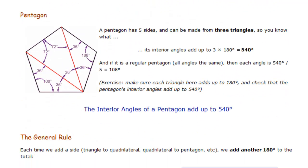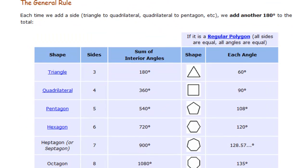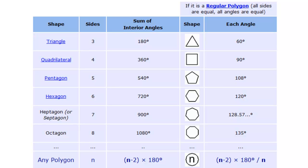The same idea applies to any polygon. A pentagon has five sides and can be composed of three triangles, giving 540 degrees for the sum of interior angles. Toward the bottom of the page, they give a general rule. For any polygon, the sum of the interior angles is (n - 2) × 180. For a triangle, that's (3 - 2) × 180 = 180 degrees. For a square, (4 - 2) × 180 = 360 degrees. For a regular polygon, each individual angle equals that sum divided by the number of sides.